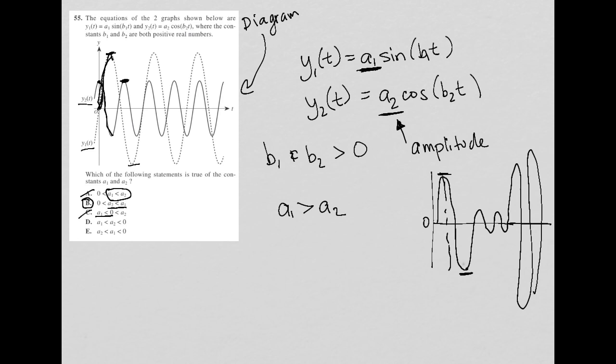For choice D, we have that a1 is less than a2, but we know that's not the case, so D is out. And with E, we do have that a1 is greater than a2, but we have that a1 is less than zero, and we just showed that is not true. So as predicted, B is the best answer here.